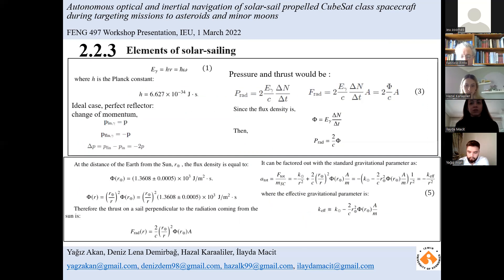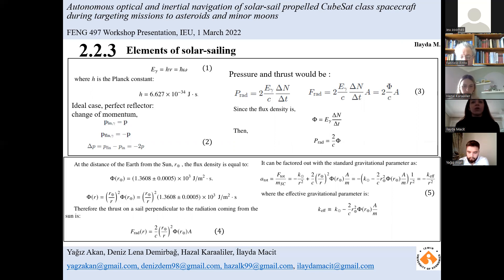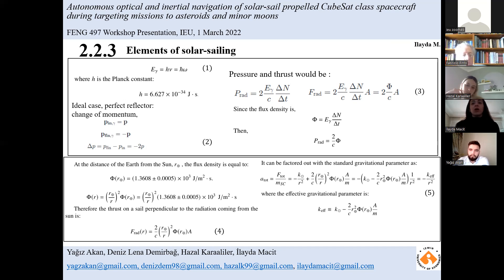To understand the pressure exerted on a solar sail, we start from the idealized case of a perfect reflector. Consider a photon incident perpendicularly on a sail — it will be reflected back opposite to the direction it arrived from, so its change of momentum is as expressed in equation two. If delta N photons per square meter strike the solar sail in time delta t, the total momentum transfer per unit time and unit area gives the pressure, and the total force on a sail of area A is shown in equation three. The thrust on a solar sail perpendicular to the incoming radiation is shown in equation four.